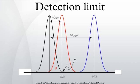The figure below illustrates the relationship between the blank, the limit of detection, and the limit of quantification by showing the probability density function for normally distributed measurements at the blank, at the LOD defined as 3 standard deviations of the blank, and at the LOQ defined as 10 standard deviations of the blank.